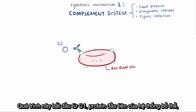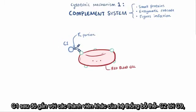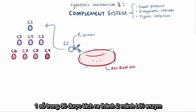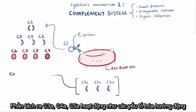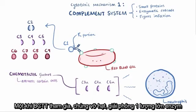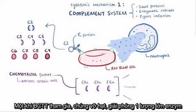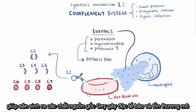The process gets started with C1, the first of the complement proteins, which binds to the Fc portion of the antibody. C1 then engages other members of the complement family, C2 through C9, some of which are activated by being cleaved by an enzyme. The cleaved fragments C3a, C4a, and C5a act as chemotactic factors, attracting neutrophils. Once neutrophils join, they degranulate, dumping enzymes like peroxidase, myeloperoxidase, and proteinase 3, which generate oxygen radicals that are highly cytotoxic and can cause tissue damage.